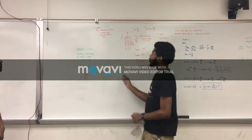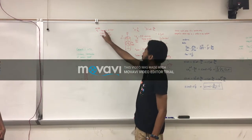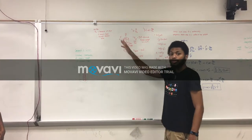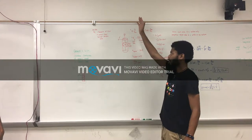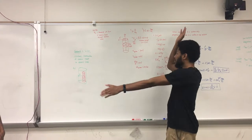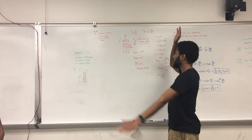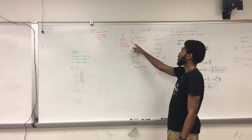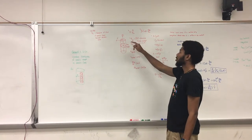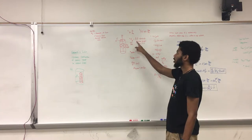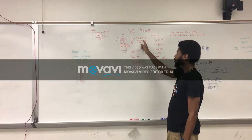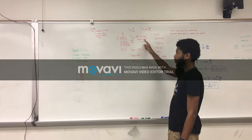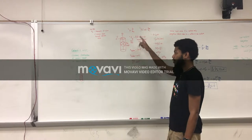We're looking for the electric flux, which measures the flow of the electric field through a certain area. Your area is going up through the middle and your electric field is perpendicular to that, creating a 90-degree angle. The equation for electric flux is the dot product of the electric field times the area, which equals the electric field times the area times sine beta.